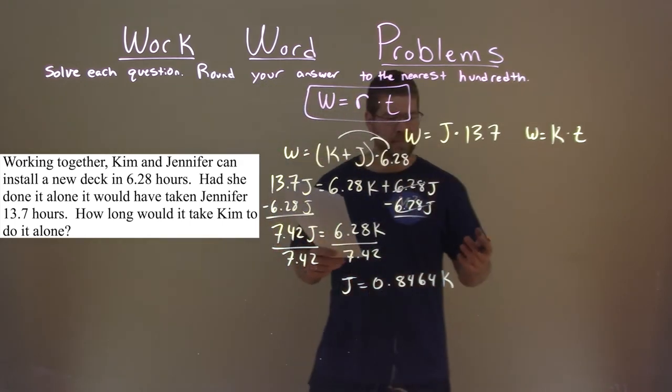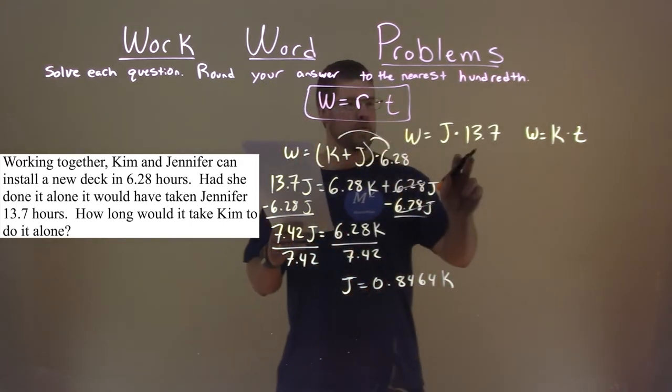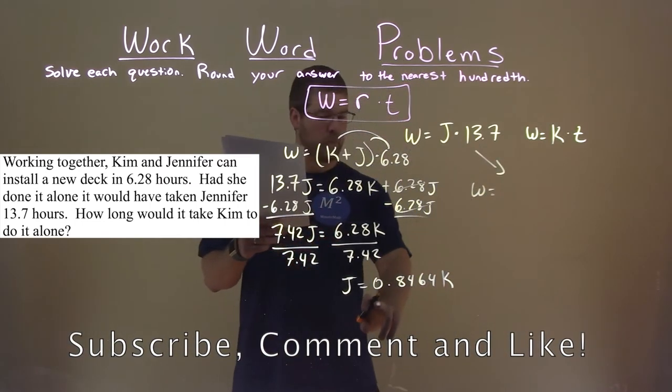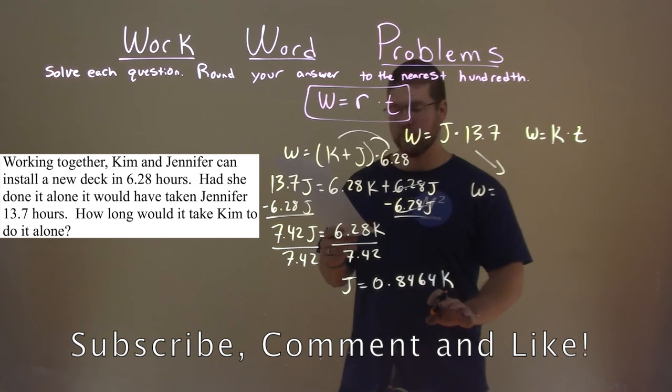So how does that help us here? Well, notice our formula for the work for Jennifer. Instead of J, Jennifer's work rate, we can write it in terms of Kim's work rate.